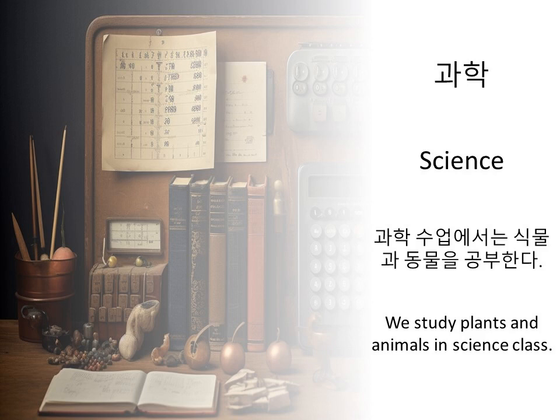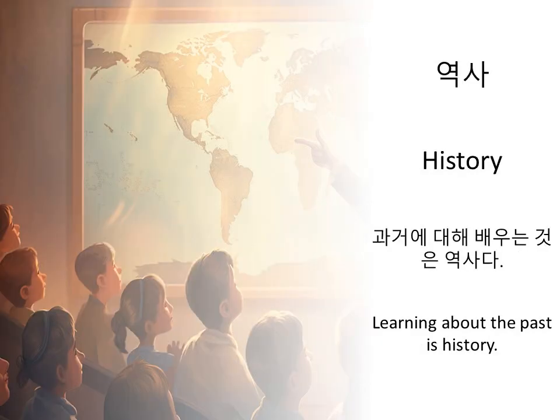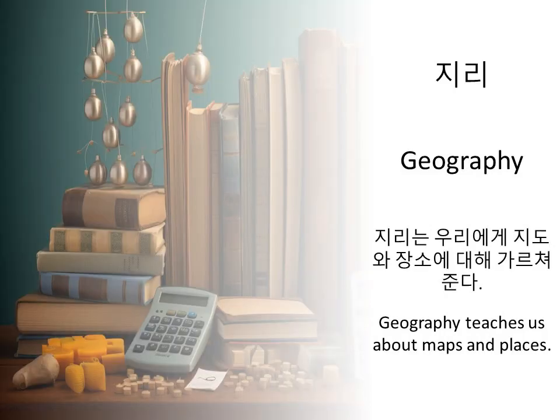Science. 과학 수업에서는 식물과 동물을 공부한다. We study plants and animals in science class. 역사. History. 과거에 대해 배우는 것은 역사다. Learning about the past is history. 지리. Geography. 지리는 우리에게 지도와 장소에 대해 가르쳐준다. Geography teaches us about maps and places.